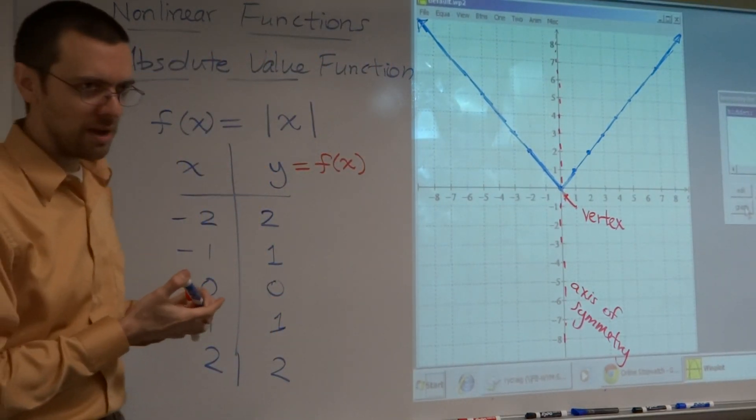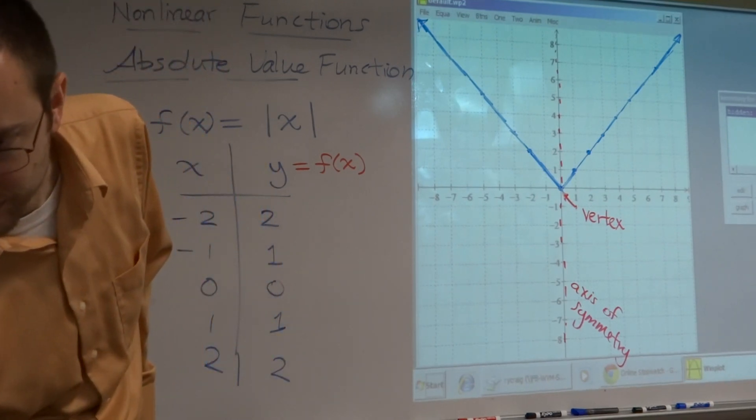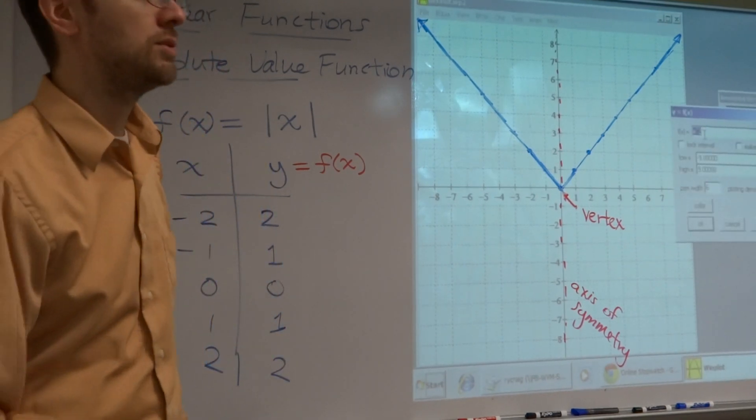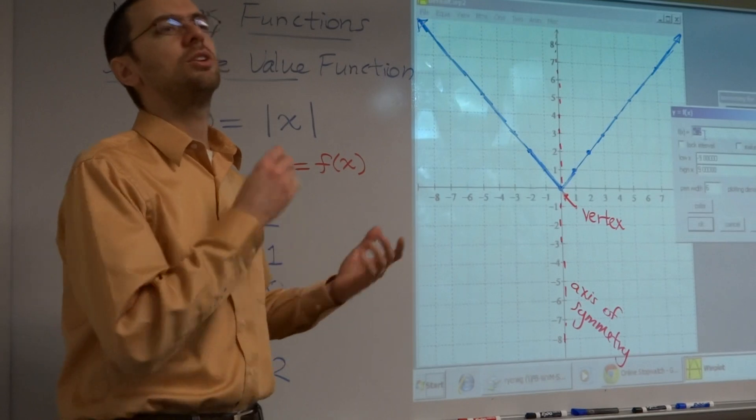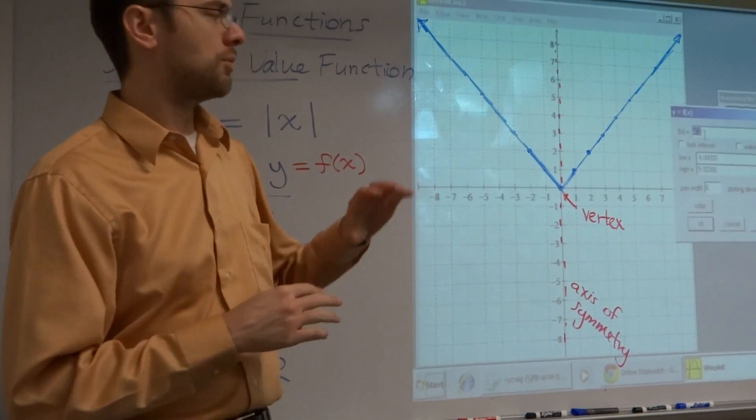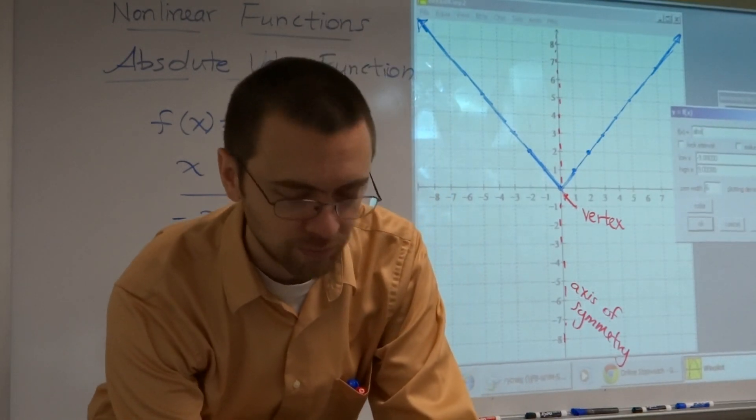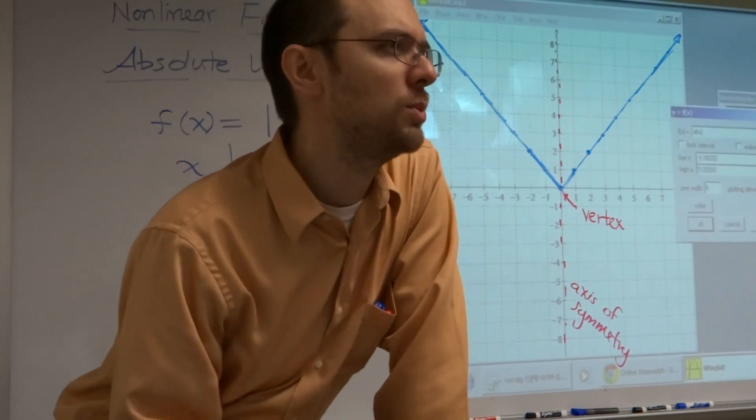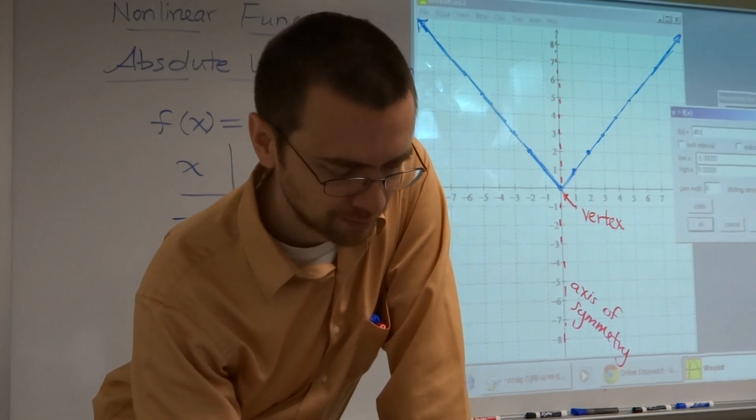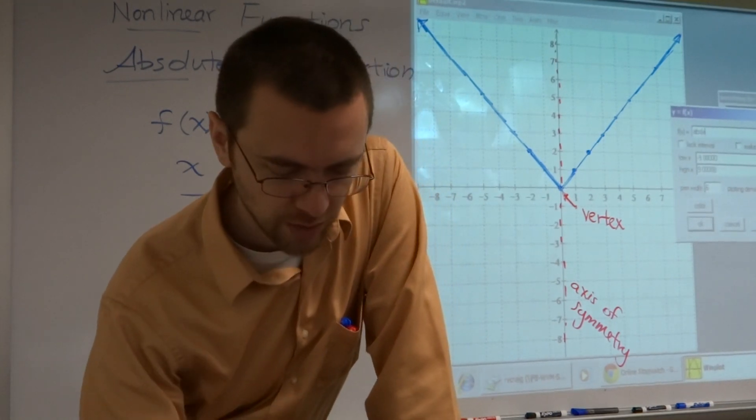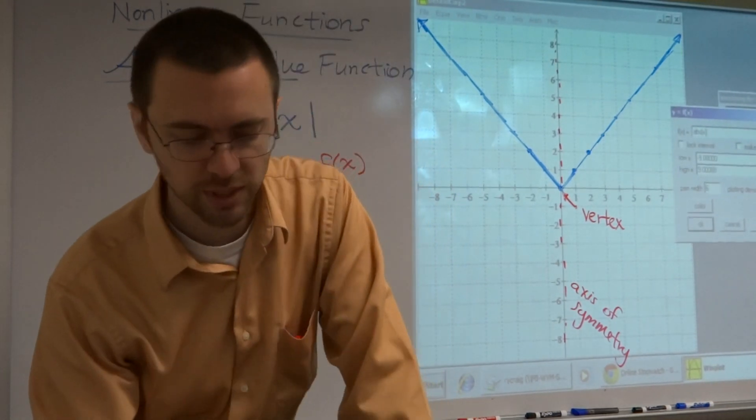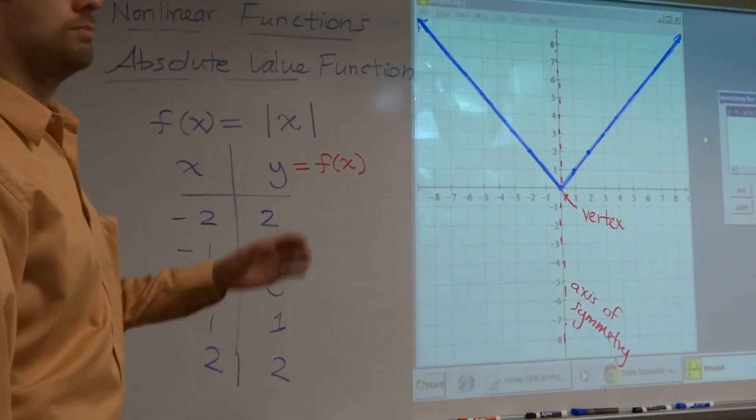Now, when I graph this using Winplot, you have to know certain things. Because x squared, you can type that in as x squared. That's not a big deal. But for absolute value functions, you actually have to type in abs and then open up parentheses, much like you would see on your graphing calculator. So the absolute value of x. Close the parentheses. And then there's my graph.